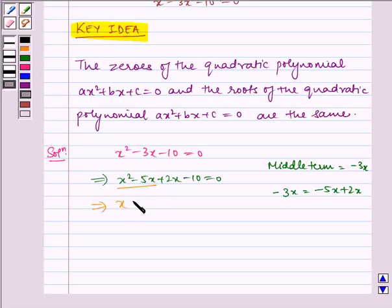Now taking x common from these two, we get x times (x minus 5) plus 2 times (x minus 5) equals 0. Which implies (x plus 2) times (x minus 5) equals 0.